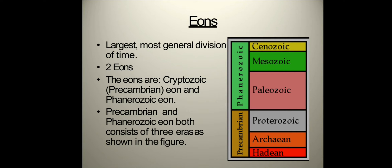Starting with the eons — eons are the largest or most general division of time. Eons are divided into two: the Precambrian eon and the Phanerozoic eon, both consisting of three eras. The first eon was the Hadean, when the Earth and Moon were predicted to be formed, lasting over 600 million years until the Archean, when the Earth had cooled enough for continents and the earliest known life to emerge. After about 2.5 billion years, oxygen generated by photosynthesizing single-celled organisms began to appear in the atmosphere, marking the beginning of the Proterozoic. Finally, the Phanerozoic eon encompasses 541 million years of diverse multicellular life, starting with the appearance of hard animal shells in the fossil record and continuing to the present.